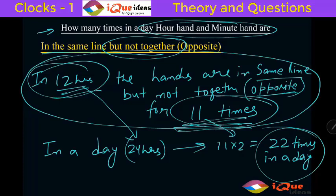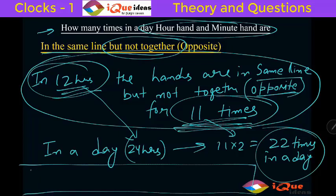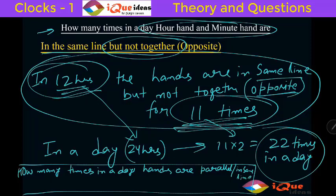Now suppose if I add a question that how many times they are in the same line - simply the same line, whether opposite or together I am not interested in that - and I simply say, or let's say parallel. How many times in a day hands are parallel, or we can also say in same line? Now when you say in same line or parallel, you don't specify the direction. That means this will be the answer for together plus opposite, so both of them will be counted.